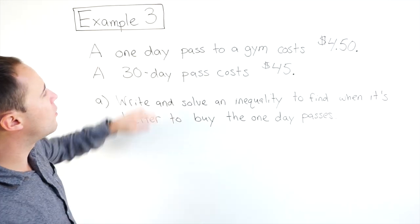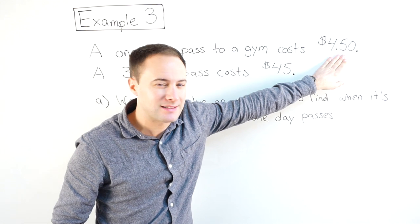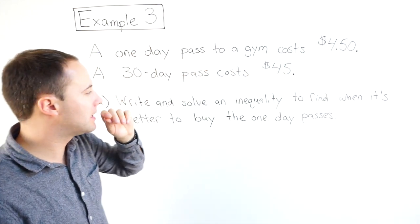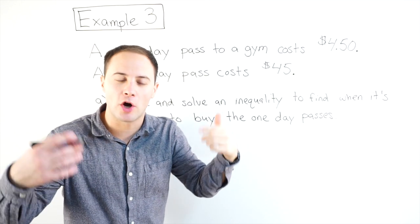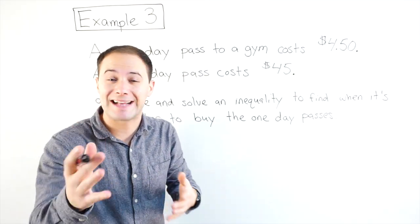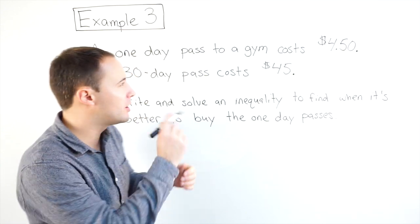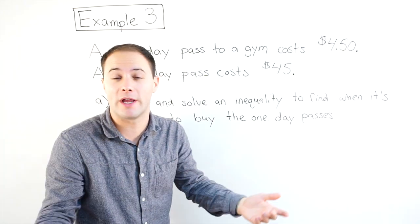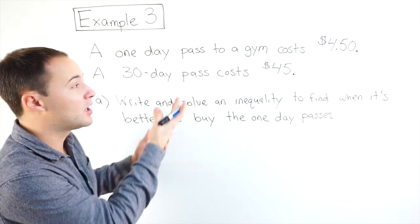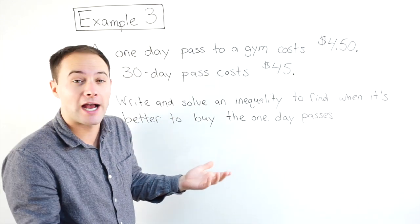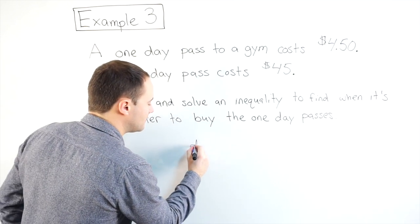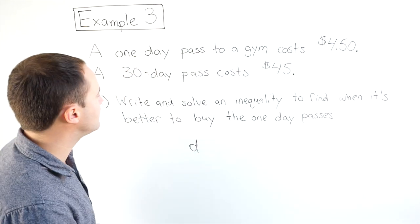So let's look. A one day pass costs $4.50, the month long is $45. Now, the one thing we don't know is how often we're going to go, how many days we're going to go. That's going to be our variable. Whenever you're writing inequalities or equations, always think, what's your variable going to be? What don't you know? And in this case, we don't know how many days we're going to go to the gym. So that's going to be my variable. I'm going to call that D, D for days to the gym.